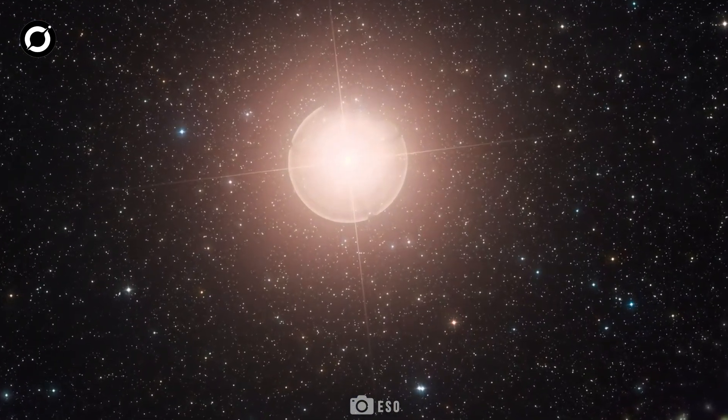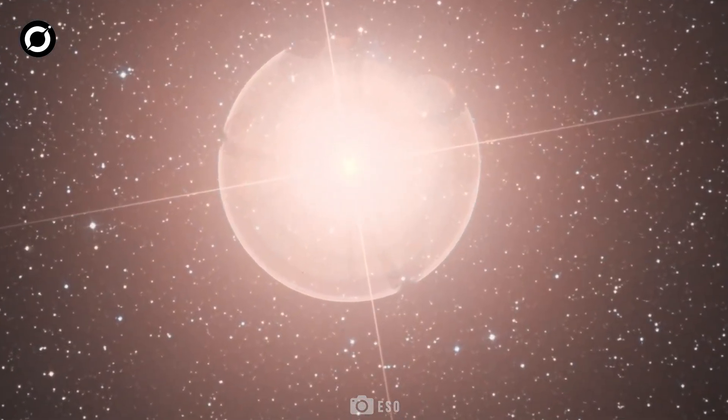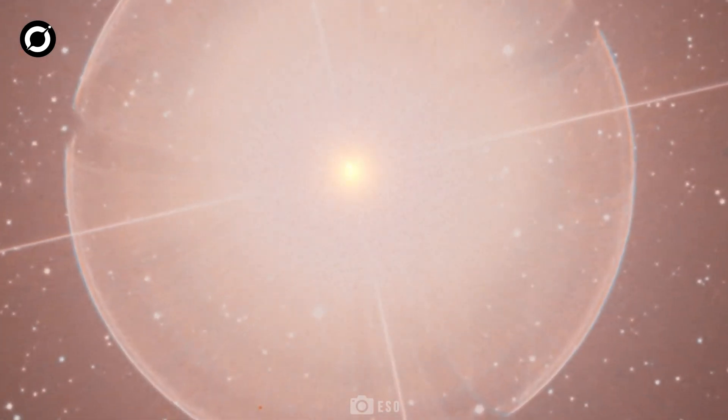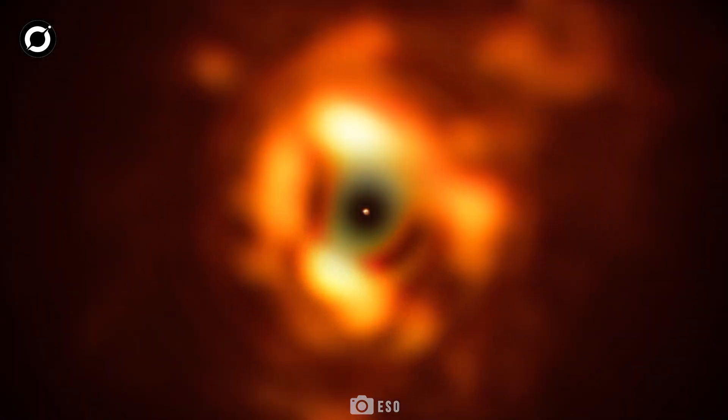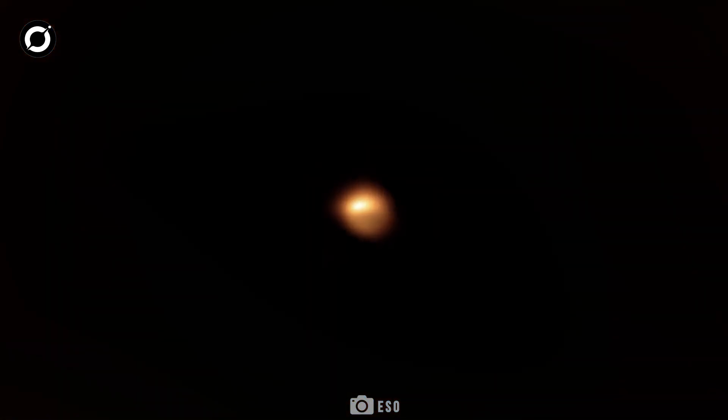Sitting on the shoulder of the constellation of Orion with a distinctly reddish hue, Betelgeuse is one of the more recognizable stars in the night sky. But it is also one of the fastest changing.